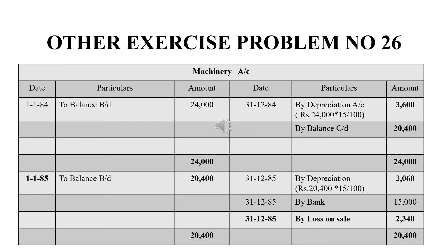In year four, the machinery was sold for $15,000. Using the written down value of $20,400, once we balance both sides, we get a balancing figure of $2,340 on the credit side — this represents the loss on sale. If the balancing figure were on the debit side, it would be profit on sale. Since the credit side represents the amount to come in and the debit side represents what is sold, the shortfall of $2,340 is the loss. The grand total on both sides is $20,400.